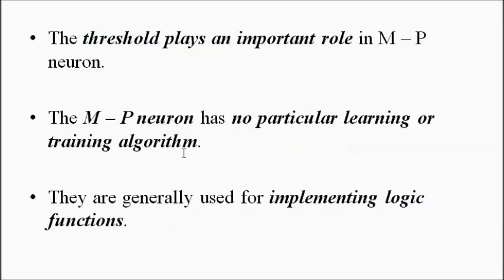An important characteristic of the McCulloch-Pitts neuron is that it has no specific learning algorithm. It does not use any specific learning algorithm whether it is supervised, unsupervised, or reinforcement. It has no particular training algorithm.